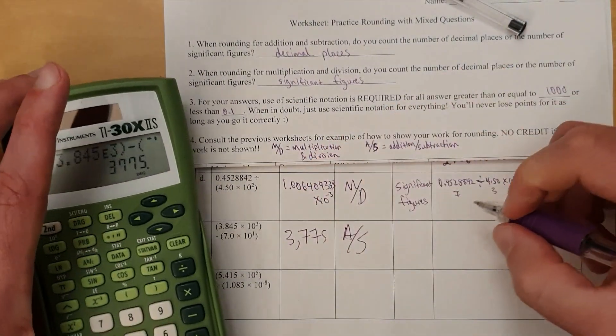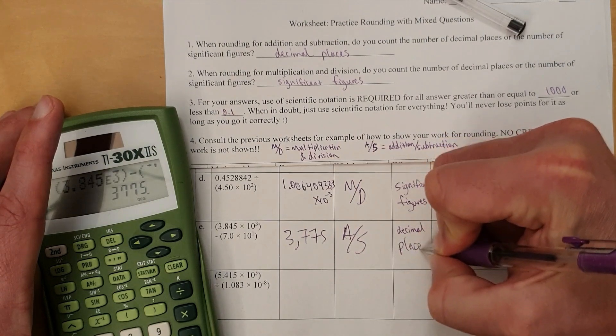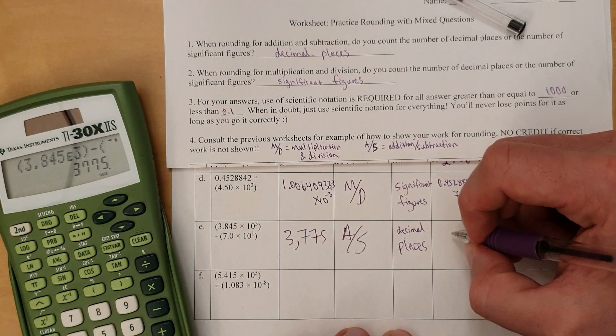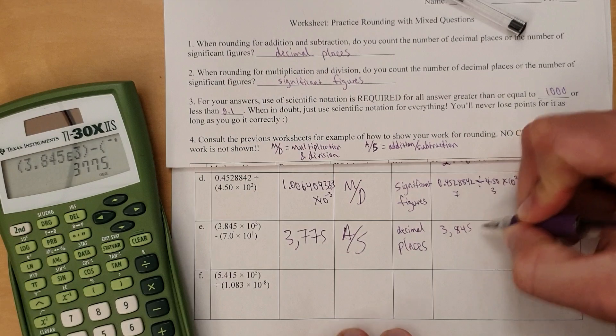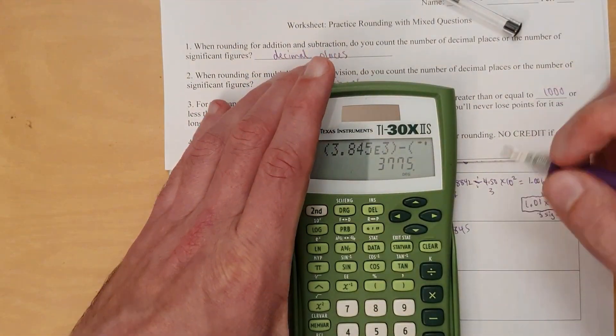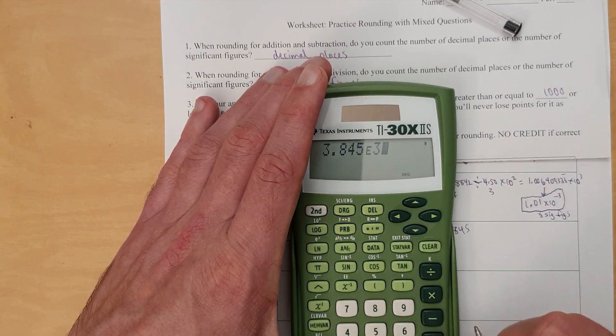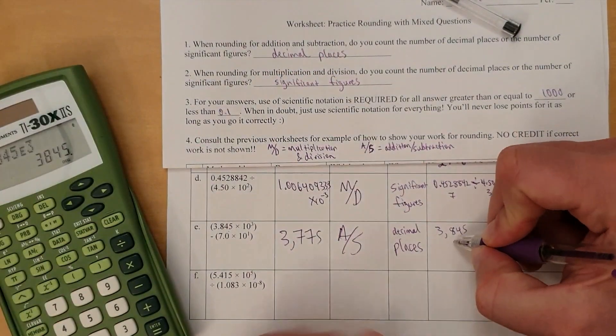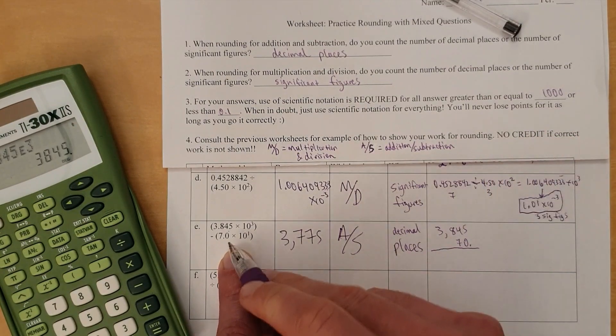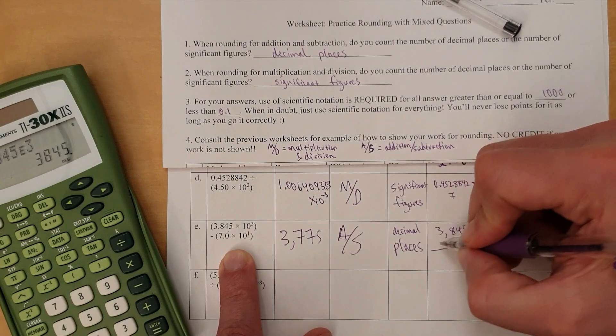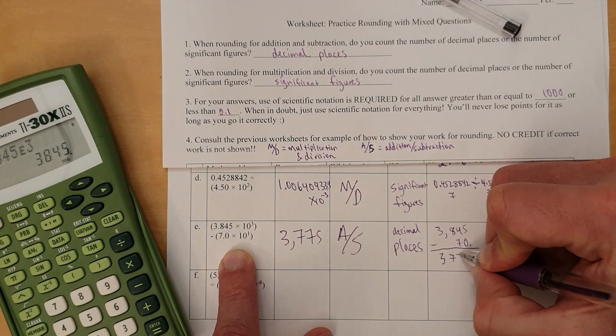And why does it work that way? Well, we're counting decimal places, of course. And for counting decimal places, we got to stack them. So this is 3,845. If it's hard to see that, just doing a calculator, 3.845 times 10 to the third is 3,845. And the bottom number, this is just 70. Remember, you got to convert to regular numbers. Though 70 with a decimal point to show that it's a significant digit. And you're subtracting, so I'll put that there.